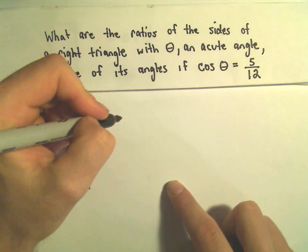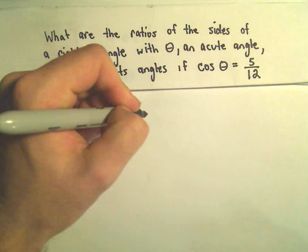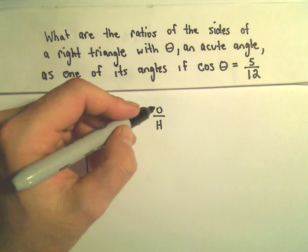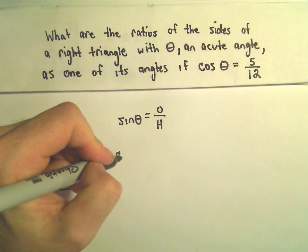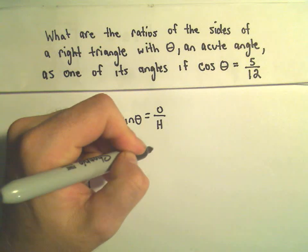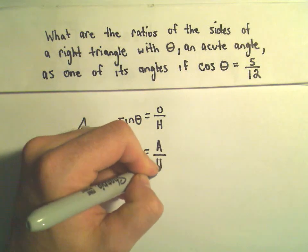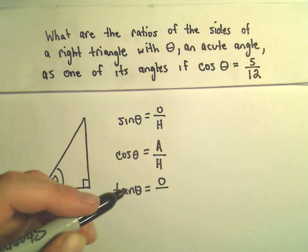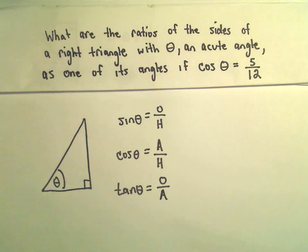So here we're going to find, we've got a right triangle with angle theta. Theta is going to be an acute angle. We know that cosine of theta is 5 over 12. So we simply want to find the values of the other trig functions. So here's going to be theta. Sine of theta is the opposite side over the hypotenuse. Cosine of theta, that's the adjacent length over the hypotenuse. And tangent of theta is defined to be the opposite length over the adjacent length.